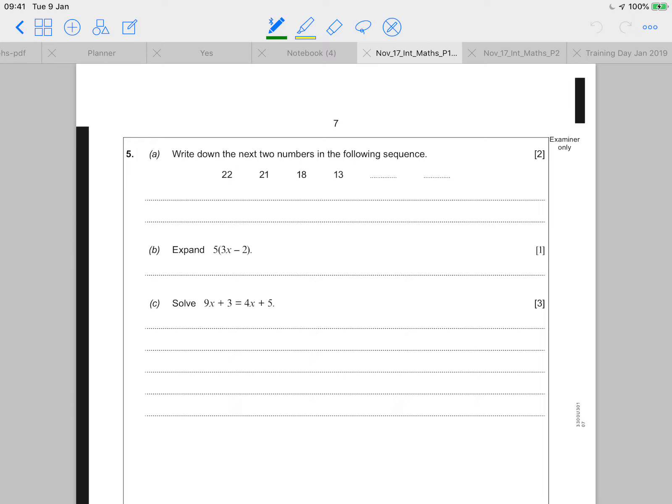Question five. Part A of question five doesn't ask for the nth term, which is quite popular in these questions. It just asks you to do the next two numbers. So your answers can go on these spaces here. And the line underneath is just for your workings out. I can see that this is going to be dropping by one, dropping by three, dropping by five. So I predict this will drop by seven. And this will drop by nine.